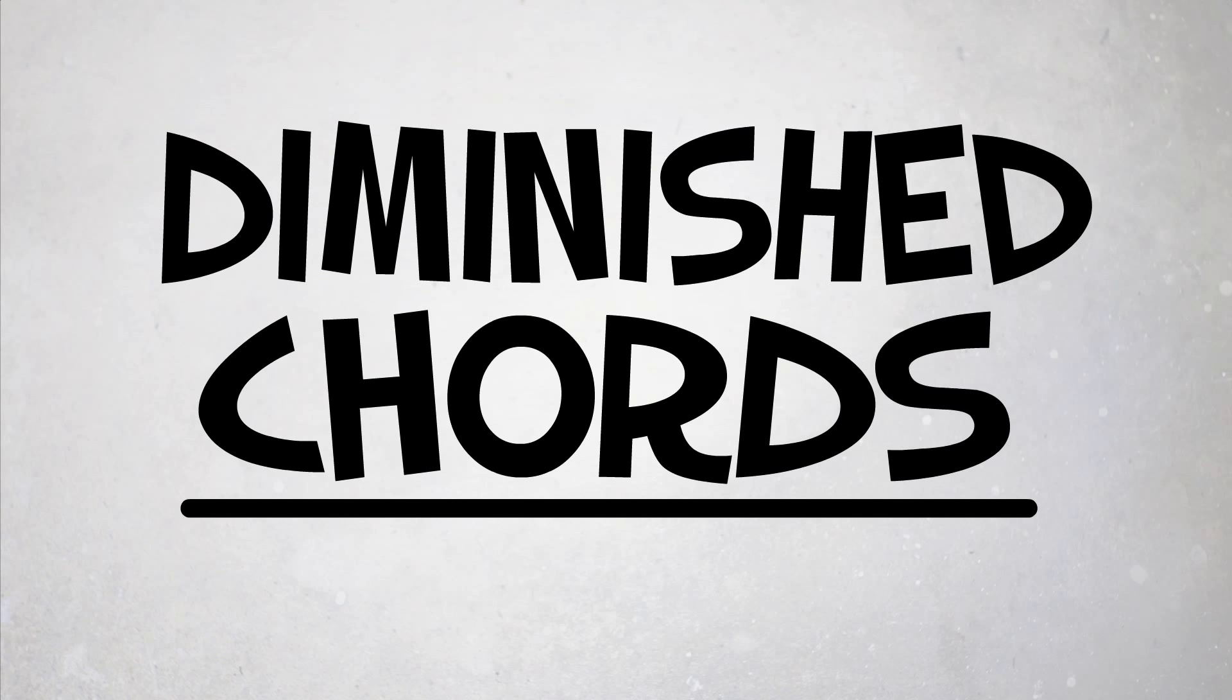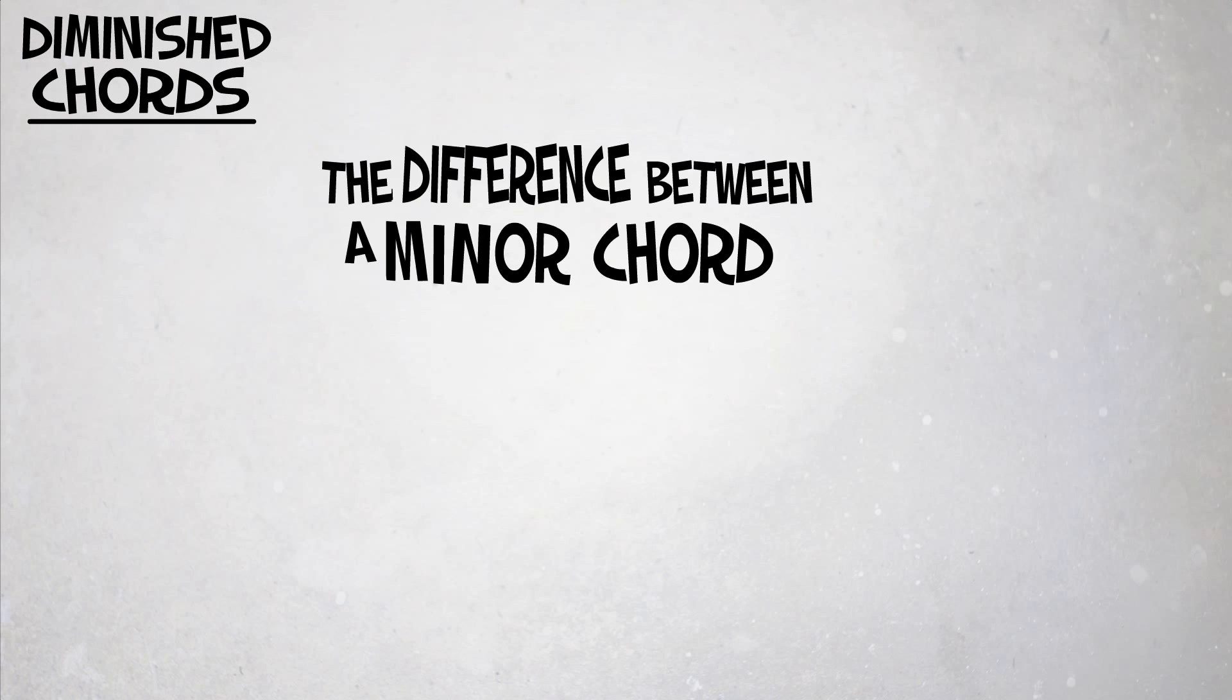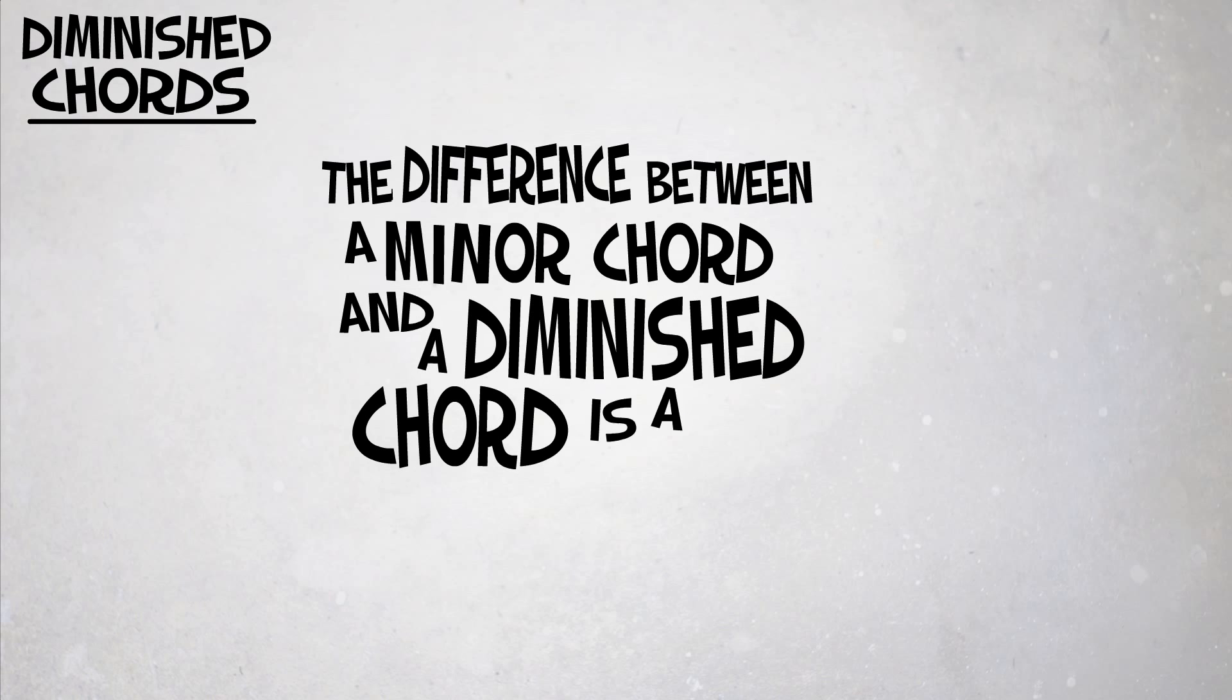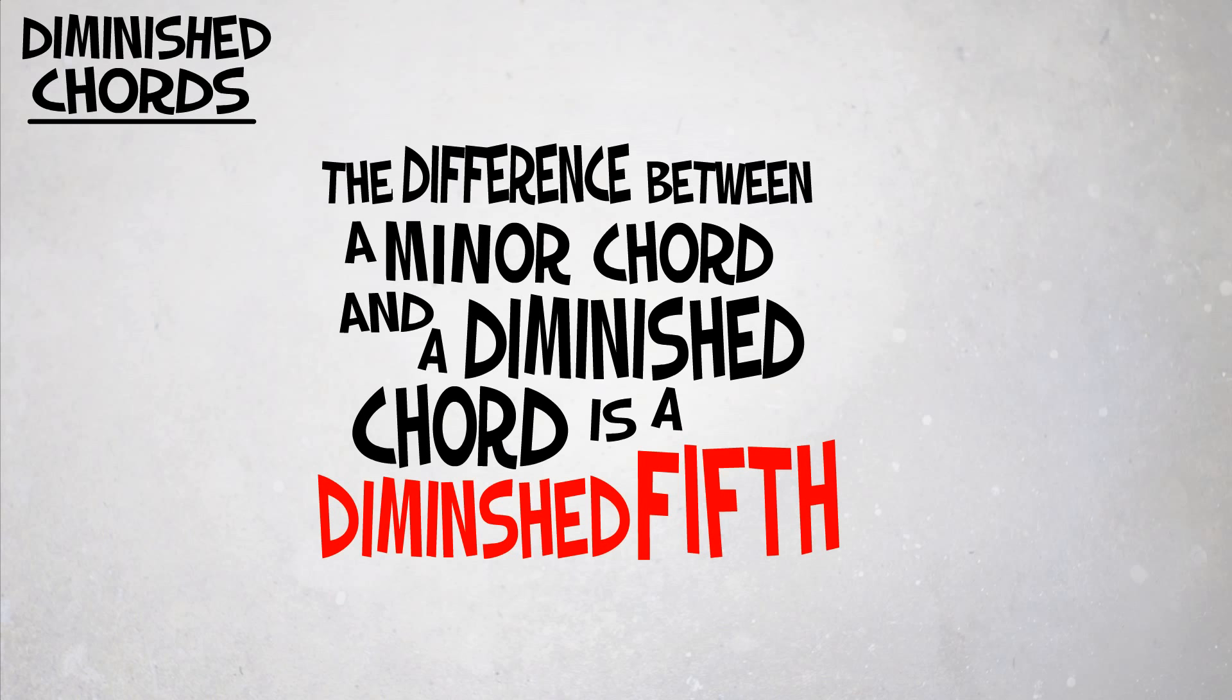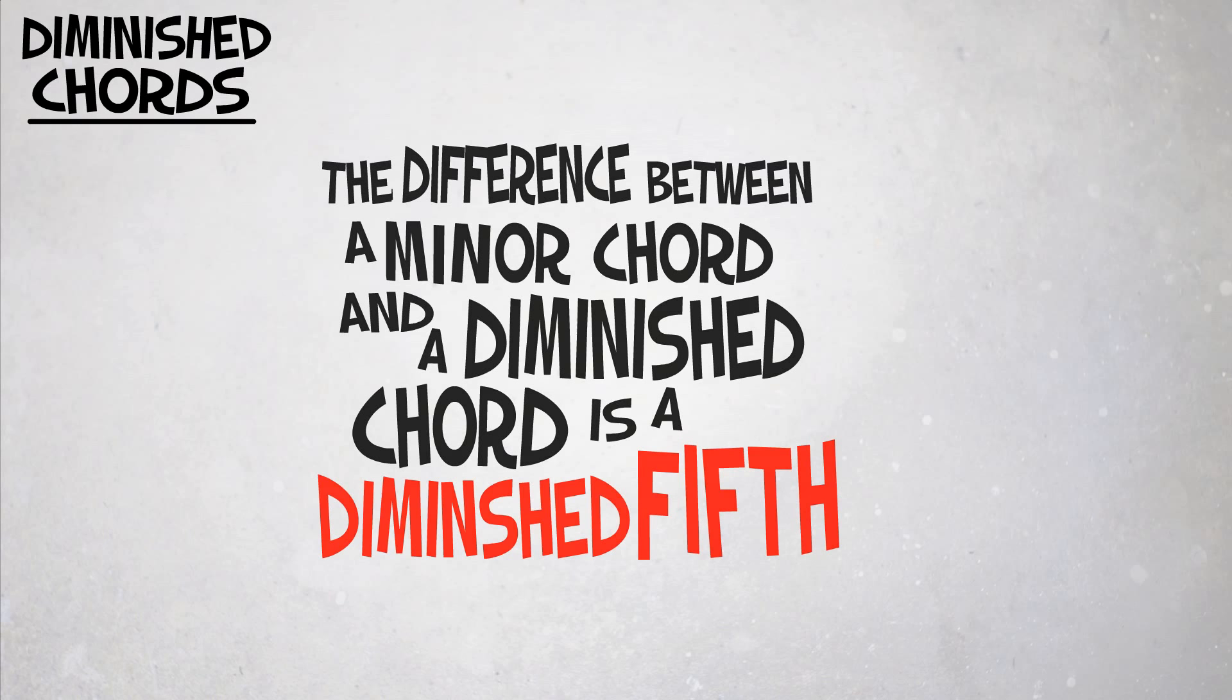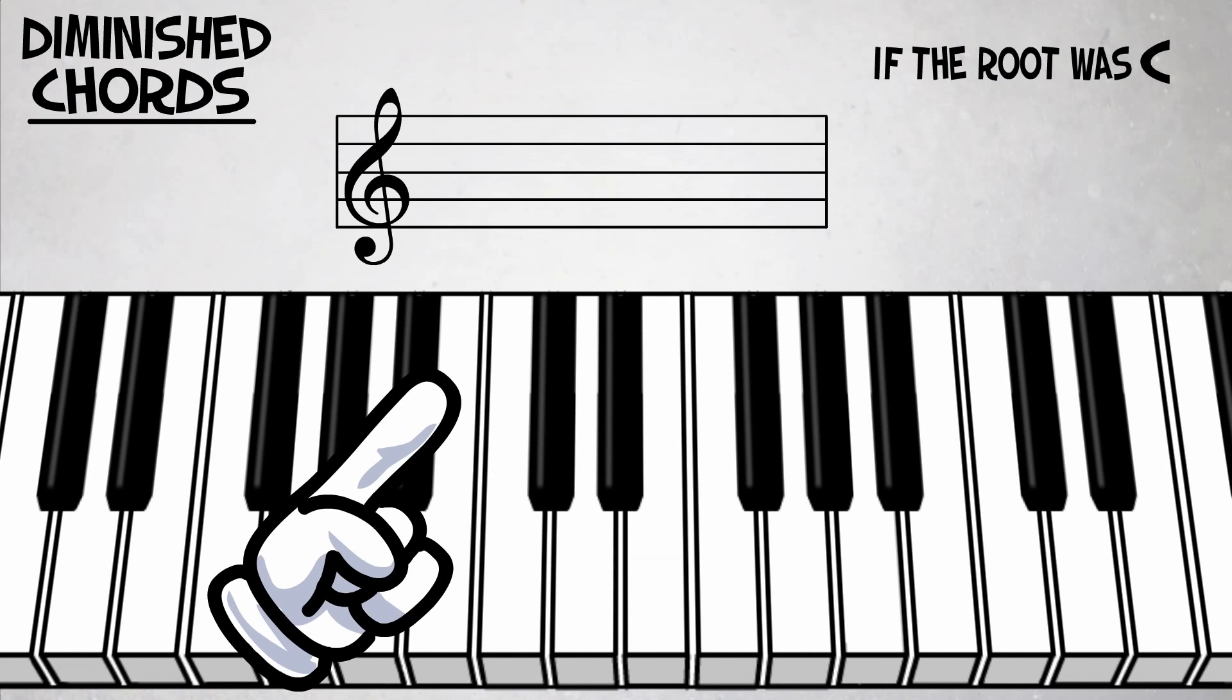Diminished chords. The diminished triad is built with a minor third and a diminished fifth. For example, if the root was C, the chord would be C,